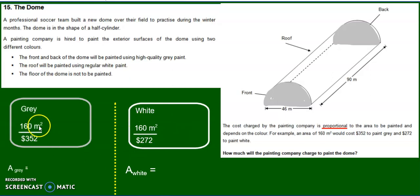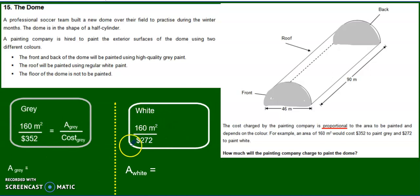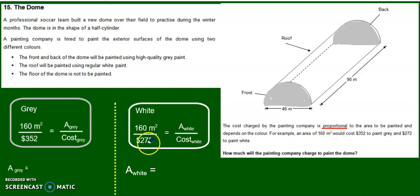160 meters squared of grey will cost $352. So once we find the area of the grey, we can figure out the cost by cross multiplying and dividing. Same thing for the white — it's a little cheaper at $272 for 160 meters squared. Once we find the area of the white, we cross multiply and divide.